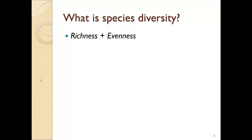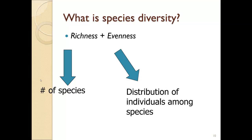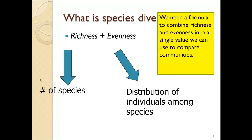We like to take both of these into account when calculating species diversity — both the number of species and the distribution of individuals among species. So what we need is a mathematical formula that combines richness and evenness and turns it into a single value that can be used to compare communities. Ideally, the bigger this value, the more diversity, and the lower this value, the less the diversity.